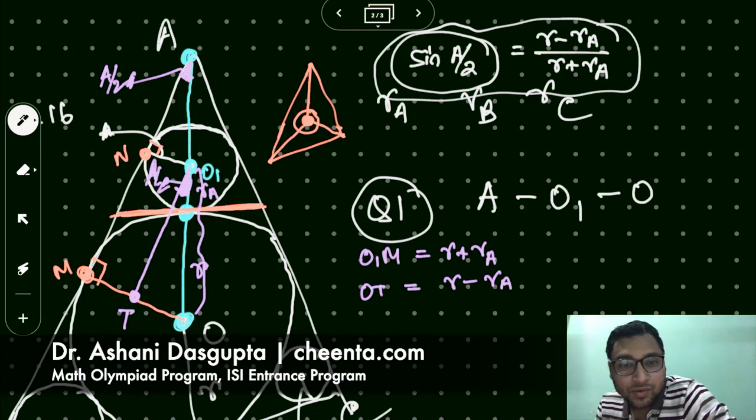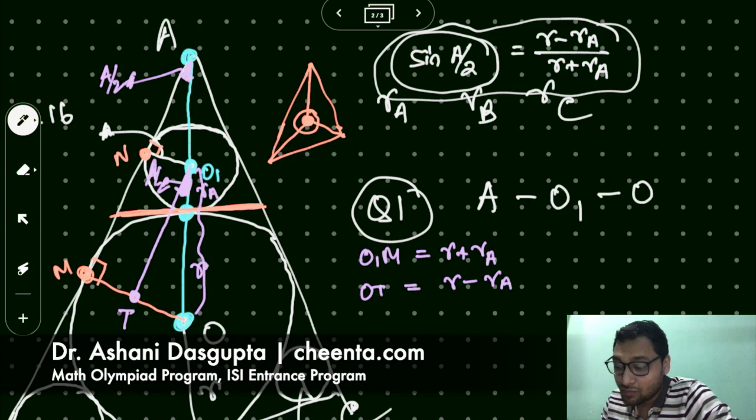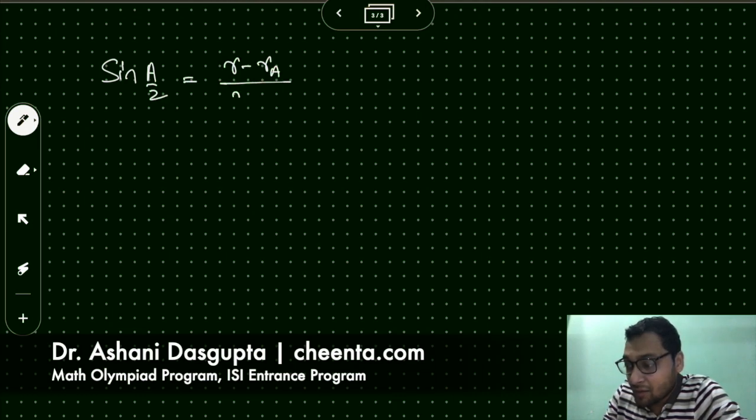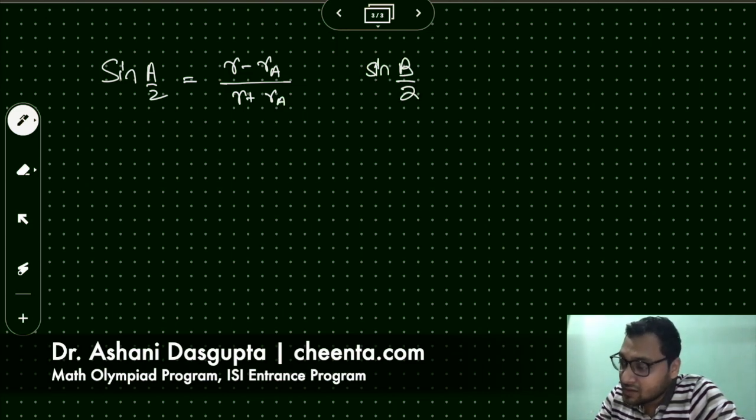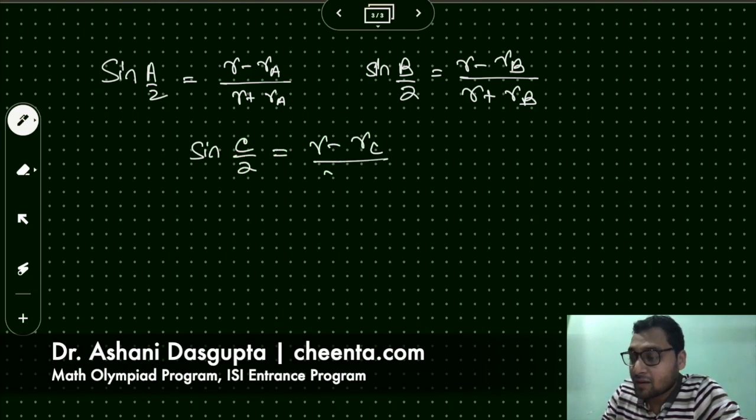So we have this beautiful result that sin of A by 2, sin of A by 2 is opposite by hypotenuse. So it's equal to R minus RA by R plus RA. Isn't it very beautiful? We just use a little bit of geometry to prove that the value of sin A by 2 is very deeply related with these in radii and the small radii as well.